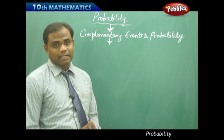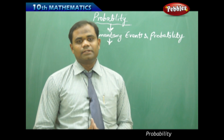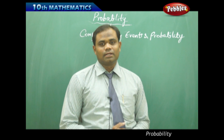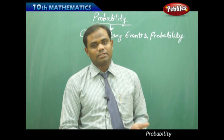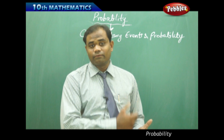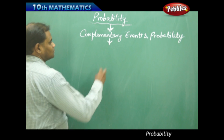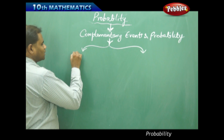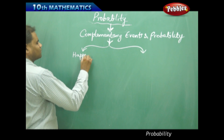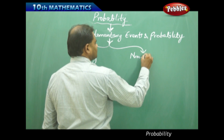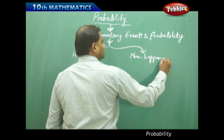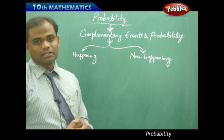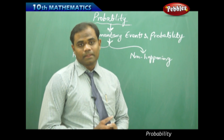Let's see what complementary events are and their respective probabilities. Complementary events are events which are quite opposite to each other — for example, getting a head when tossing a coin, and its complementary event is getting a tail. We identify complementary events through occurring and non-occurring, or happening and non-happening of an event. This is how we differentiate and understand complementary events; they are said to be complementary to each other.